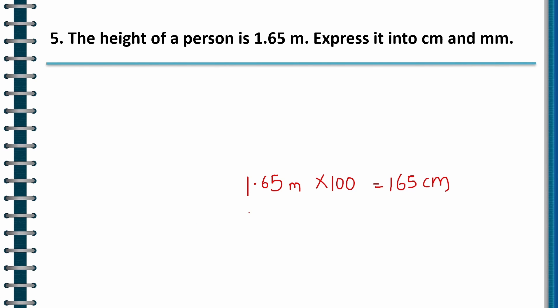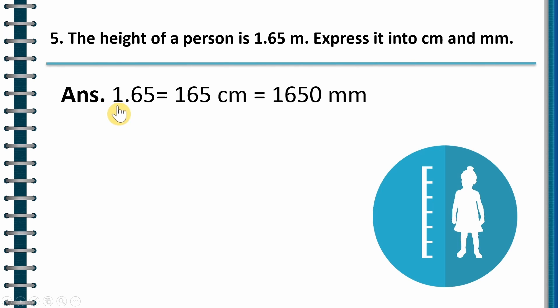And this will give me 165 centimeter. Correct? Then to convert it into millimeters, what we do? 165 centimeter, I multiply it with 10 because 1 centimeter is 10 millimeters. So here millimeter, here centimeter. So this will give me 1650 millimeter. So the answer is 1650 millimeter. Let us check the answer. So as you can see, 1.65 meter is 165 centimeter, and 165 centimeter is 1650 millimeters. So I hope you understood how to do this. If I want to convert meter into centimeter, I multiply meters with 100, and if I want to convert centimeter into millimeter, I multiply it with 10.